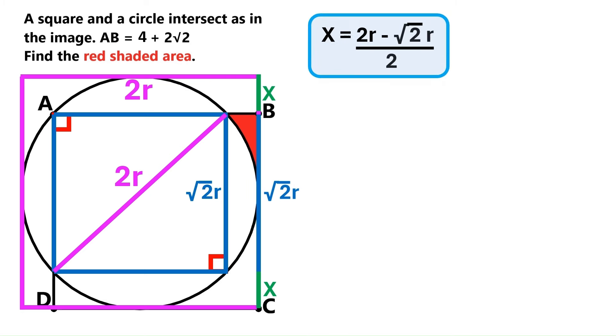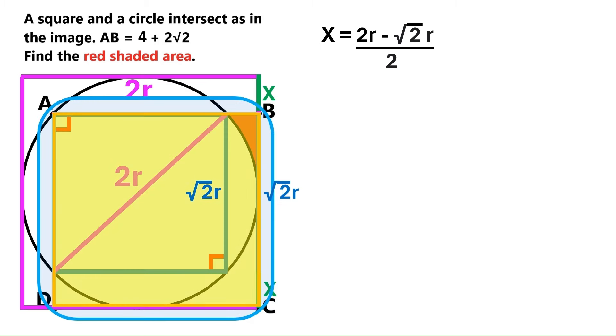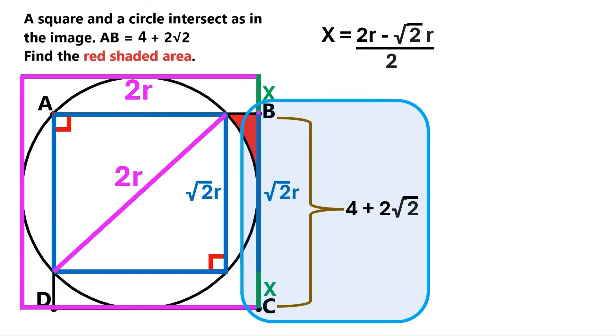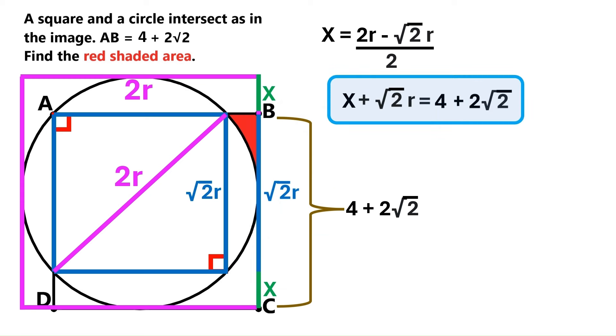Let's keep this information up here. Remember, we know AB is 4 plus 2 times root 2, and AB and BC must be equal, because they are both sides of the square ABCD. Then BC is also 4 plus 2 times root 2. BC is also equal to root 2R plus x. Let's express that as an equation.